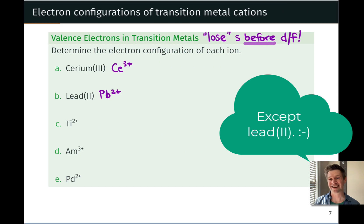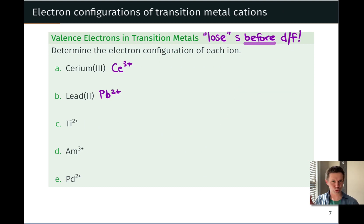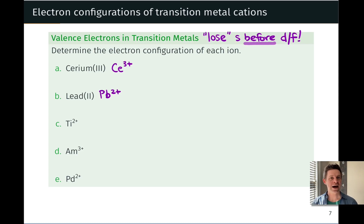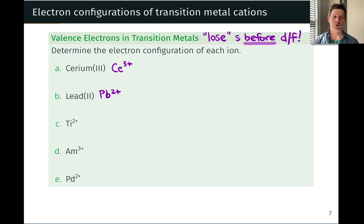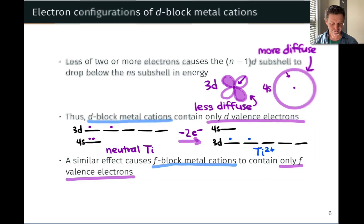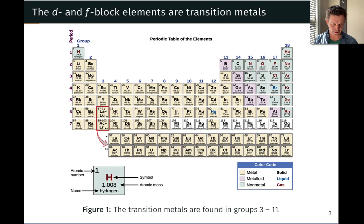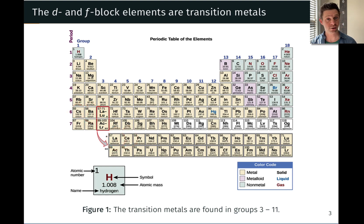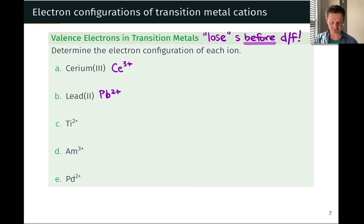All of these are transition metal, lanthanide, or actinide cations. The rule is that we lose the S electrons before the D or F electrons and put all valence electrons in the cation into a D or F subshell. First, we need to determine how many valence electrons are in the neutral element, then adjust for the cation's charge. Starting with cerium — Ce³⁺ — cerium is in the fourth position relative to xenon, the closest noble gas, so it has four valence electrons when neutral. Ce³⁺ therefore has one valence electron remaining.